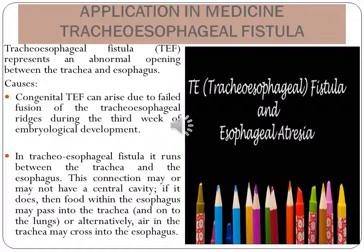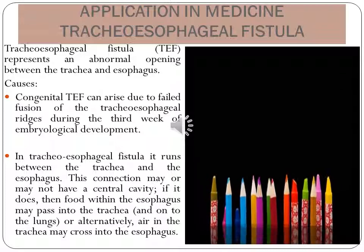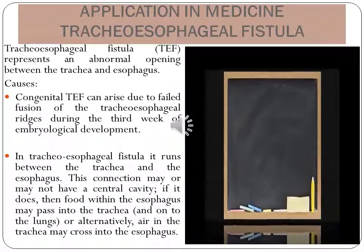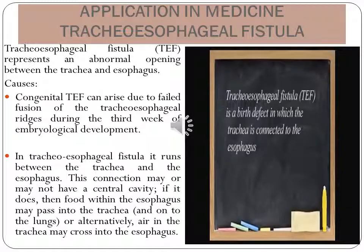Tracheoesophageal fistula is associated with a disease called esophageal atresia. The esophagus is the tube which passes from the mouth to the stomach and carries all the food that the baby eats. The tracheoesophageal fistula represents an abnormal opening between the trachea and the esophagus. It can arise due to failed division of the tracheoesophageal ridge during the third week of embryological development.